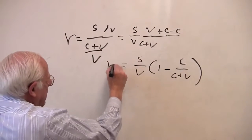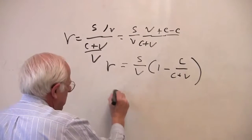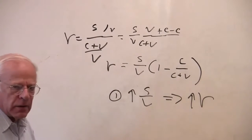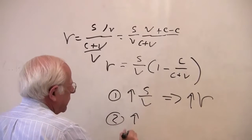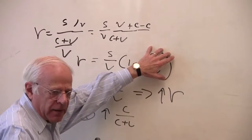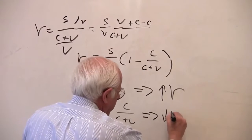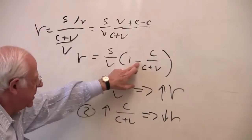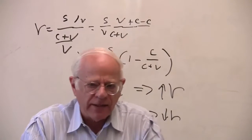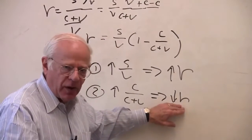What does this say? A rise in the rate of exploitation implies an increase in the rate of profit. A rise in the composition of capital — what Marx calls the composition of capital, what I called the index of mechanization — implies a fall in the rate of profit, because it has a negative sign associated with it. Notice: the profit rate is going in two different directions. As the rate of exploitation rises in capitalism, it increases. But as mechanization occurs, which we expect in capitalism, that profit rate is going to fall. And then the question is, what difference does this make?